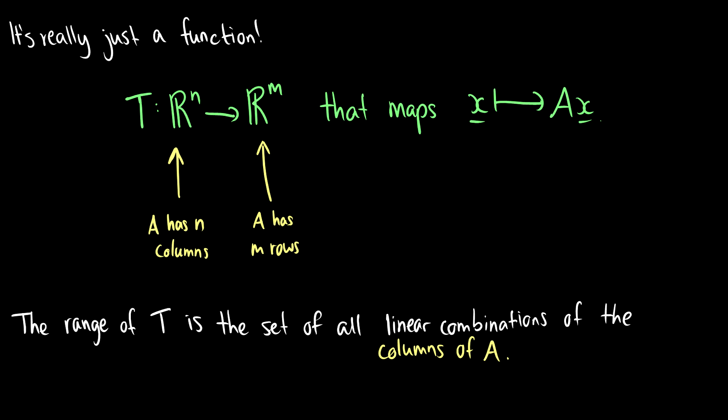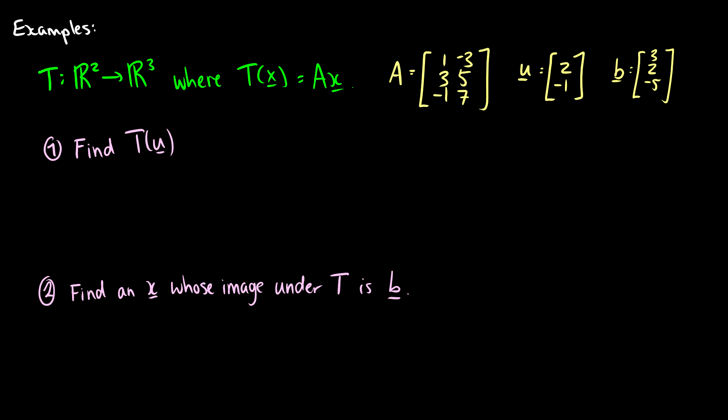So how do we write this? Well, it's a function from n columns to m rows that maps our vector x to the matrix times x. This is the same as writing T(x) = A times x. That's what a linear transformation is — it's a function whose range is the set of all linear combinations of the columns of A.